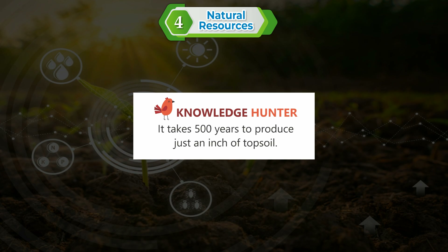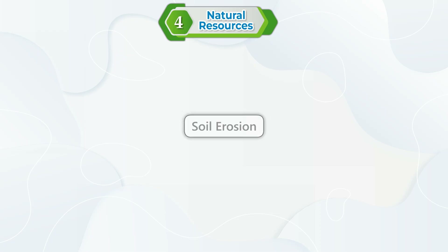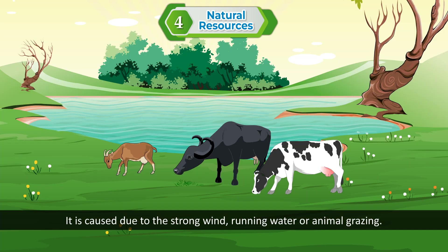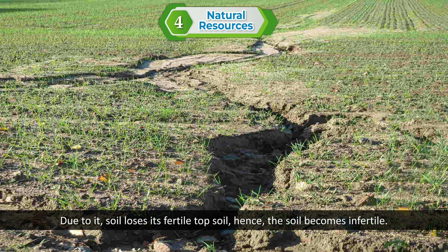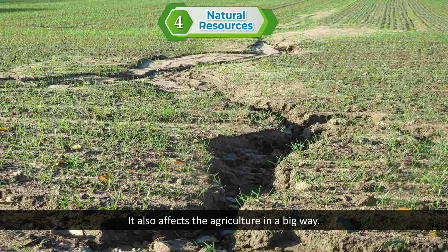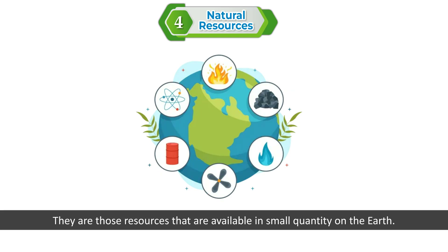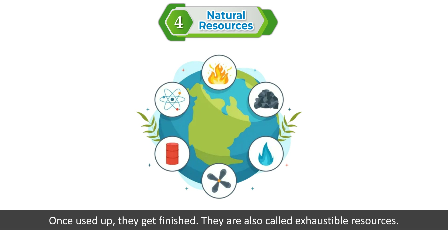Knowledge Hunter: It takes 500 years to produce just an inch of topsoil. Soil erosion is caused due to strong wind, running water, or animal grazing. Due to it, soil loses its fertile topsoil and becomes infertile. It also affects agriculture in a big way.